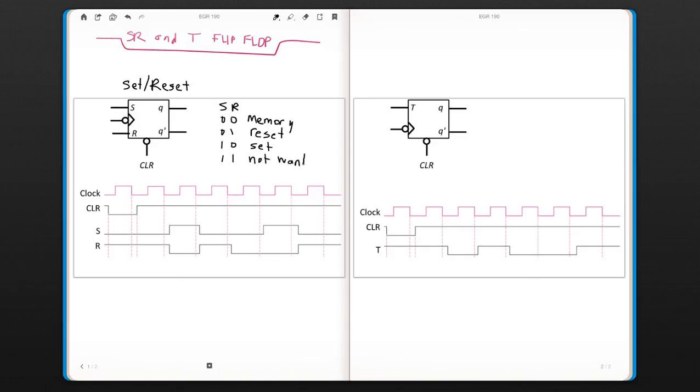The only difference from the latch is that you have a clock input now. And in this case, it's a trailing edge clock. So all these happen at clock transition. Otherwise, it doesn't happen.